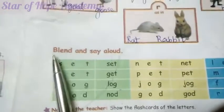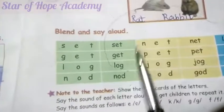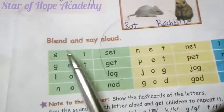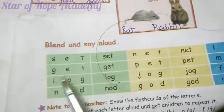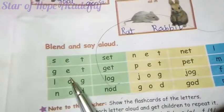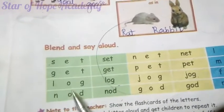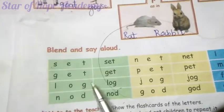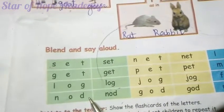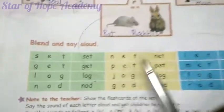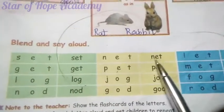Okay. Blend and say aloud. E-I-T — it. S-I-T — sit. G-E-T — get. L-O-G — log. N-O-D — nod. N-I-T — knit.